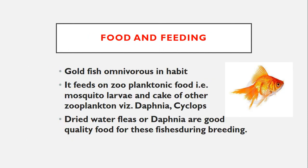Now about food and feeding habits. Our three important aspects are: external characters, food and feeding, and reproduction. Goldfish is omnivorous and feeds on zooplankton food like mosquito larvae and other zooplanktons. Zooplanktons include Daphnia, Cyclops, and Nauplius — these are insects and crustaceans, and all are examples of zooplankton present in water.